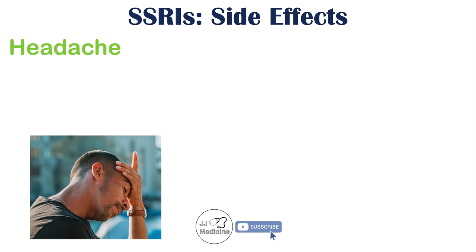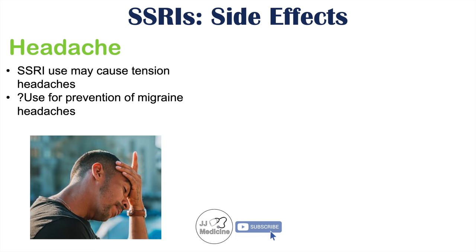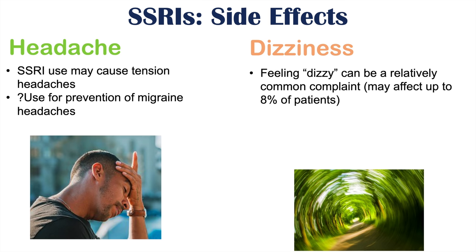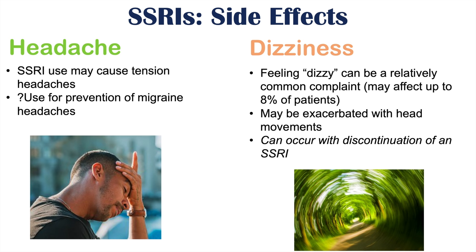SSRIs can also lead to headaches, specifically a tension-type headache. There is some evidence that SSRIs may be used for the prevention of migraine headaches. Dizziness is also another side effect — feeling dizzy is a relatively common complaint, affecting up to 8% of patients. The dizziness may be exacerbated with head movements and can also occur with discontinuation of an SSRI.